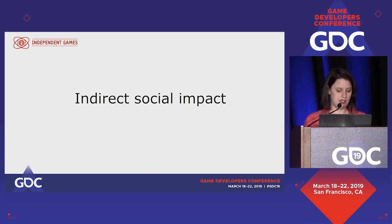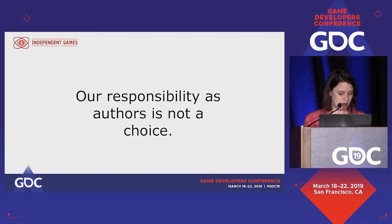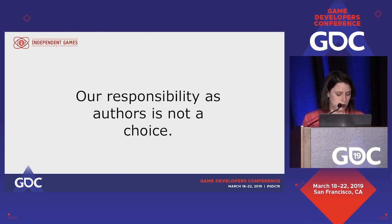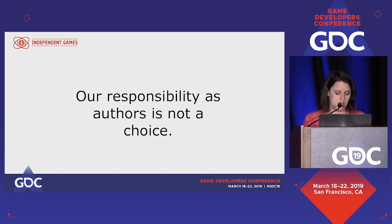Every work we create has an impact and, as authors, we have a responsibility to think about the creations we make. Our responsibility as authors is not a choice — it is a fact and we cannot ignore it. That's why we have to make at least inclusive games. Making an inclusive game is an approach that consists in thinking about the impact that each creative decision could have and seeking to limit, as much as possible, any potential negative impact.